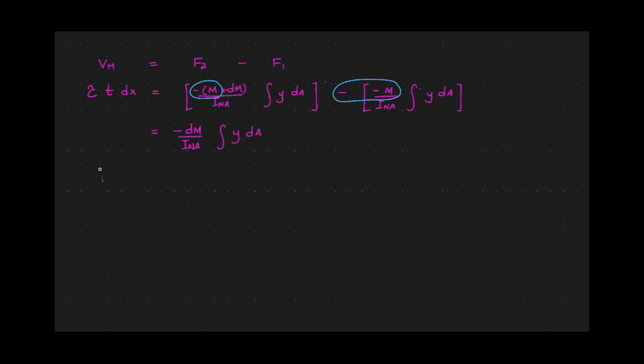I'd like to find the formula for the transverse shear stress in our beam, and I'd like to move dx on the right side of the equation. So I would have negative dm over dx, and I would like to move t also on the right side of the equation. So therefore I have 1 over i of the neutral axis times t, and I have the term integral y dA.